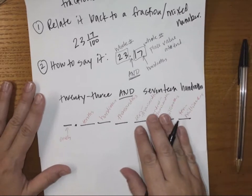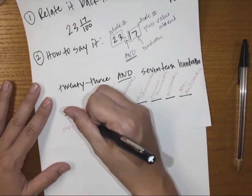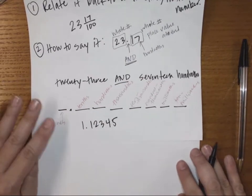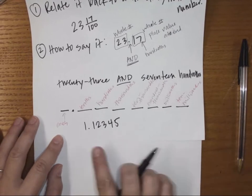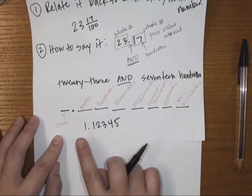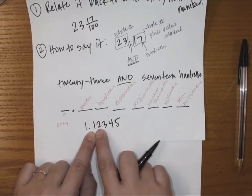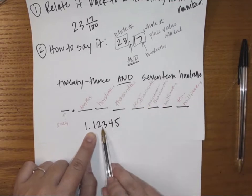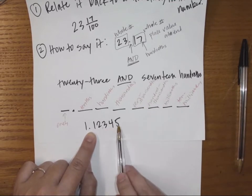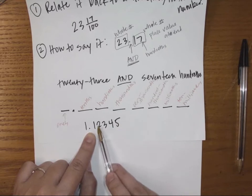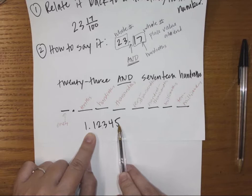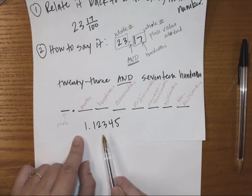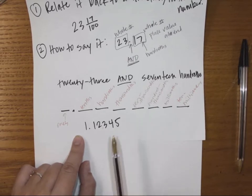For example, the number 1.12345: you read it as one and — the decimal part 12345 read as a whole number is twelve thousand three hundred forty-five — and then you say the place value of the last digit. The five is in the hundred thousandths place, so this decimal is read as 'one and twelve thousand three hundred forty-five hundred thousandths.'